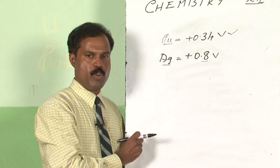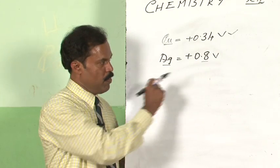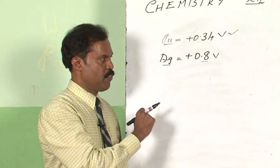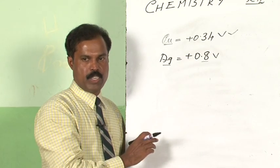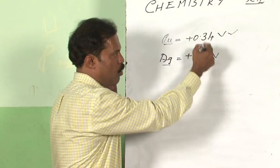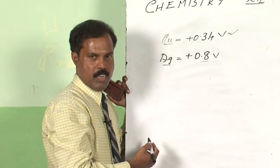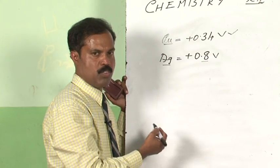Suppose you set up a cell using these two electrodes, which would be the reduction half and which would be the oxidation half? From the electrode potential values you have to decide how you represent a cell and how you set up a cell.